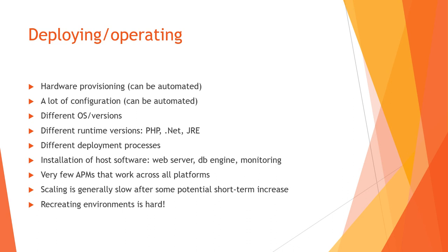The bottom line for all of this is: recreating an environment is hard, and it shouldn't be. If I have a production environment and I want a second identical one, I should basically be able to copy and paste it. Although some automation tools promise that, the reality is none of them do it automatically, because there are many things we can change in an operating system that an automated tool simply won't be able to see. VM snapshots can help, but they bring their own challenges.